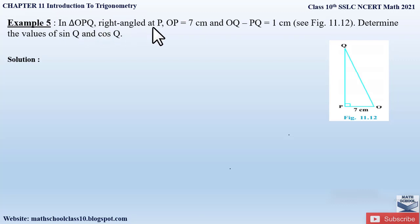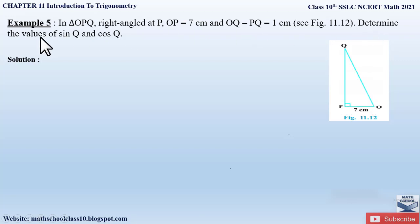Example 5 from Chapter 11, Introduction to Trigonometry says: In triangle OPQ, right-angled at P, OP is equal to 7 centimeters and OQ minus PQ is equal to 1 centimeter. Determine the value of sin Q and cos Q. Here Q is our acute angle, and we have to find out the value of sin Q and cos Q. Given OPQ is a right angle triangle, right-angled at P.